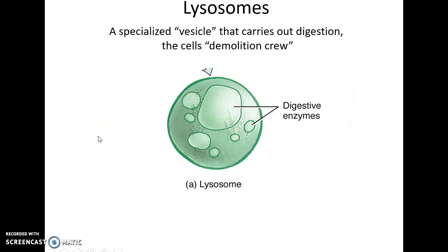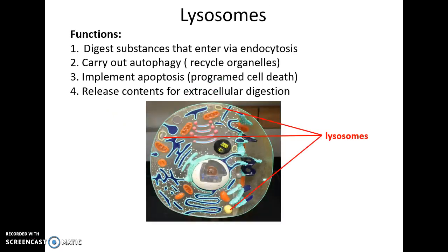Lysosomes are specialized vesicles that carry out digestion, breaking down substances — especially things brought into the cell through endocytosis. Lysosomes can digest substances, carry out autophagy (recycling old organelles), implement apoptosis (programmed cell death), and release their contents extracellularly to digest things outside the cell.